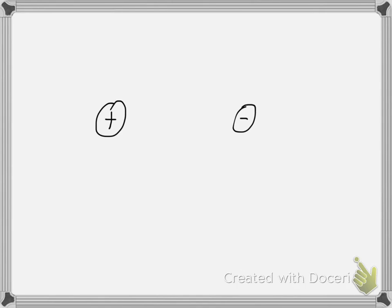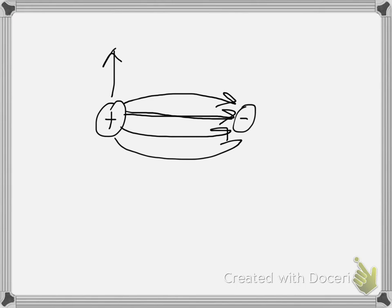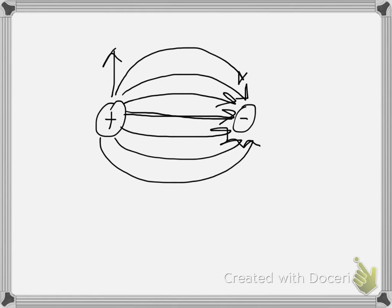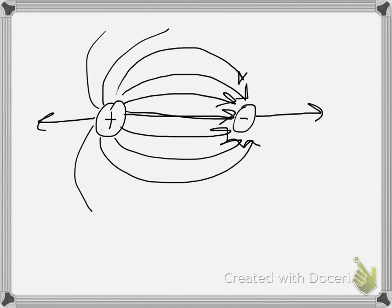What about the case where we have a positive and a negative charge? These field lines will actually cross — not criss-cross, but they will meet and join. We have a line emanating away from the positive charge, terminating on the negative charge. Only the field lines pointing directly away from the other charge will stay straight; everything else will curve in this fashion. This is how the field lines look for a set of two opposite charges.